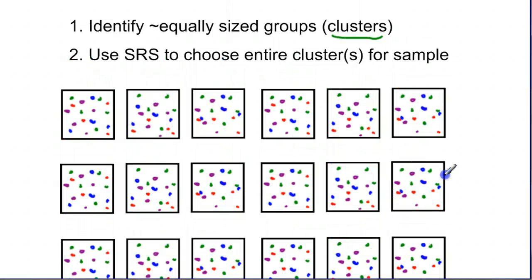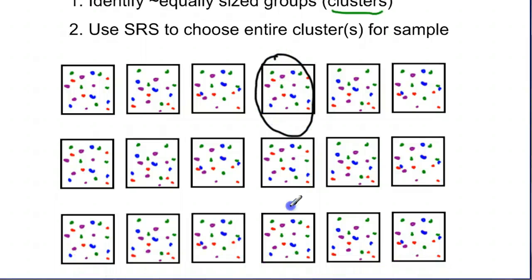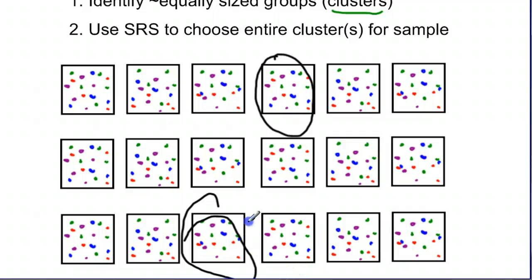If you have that, you can use a simple SRS to randomly select a few of these groups — let's say one or maybe just two of the groups. Those two clusters, those two groups, are going to be your entire sample, because there's enough people in one or two of these groups to make up your entire sample.